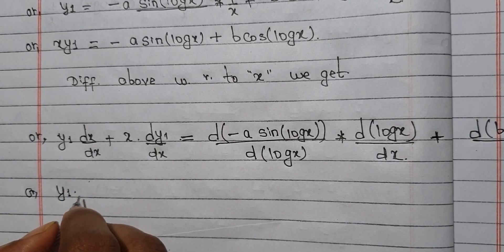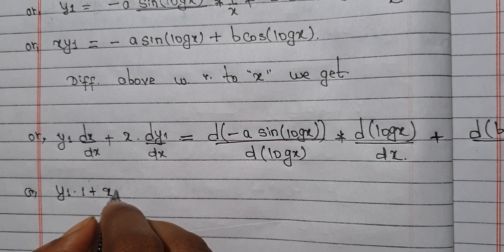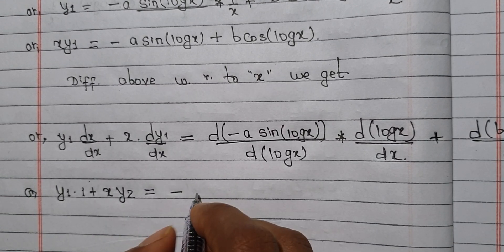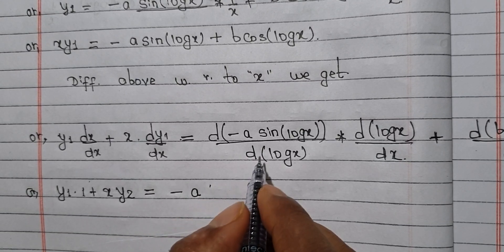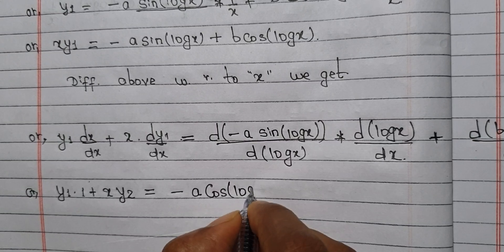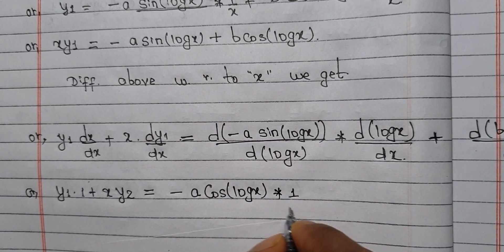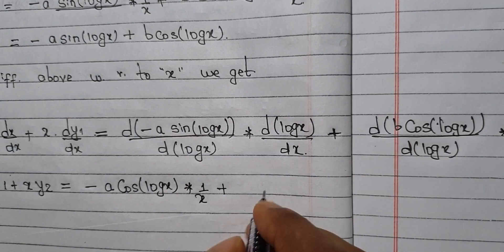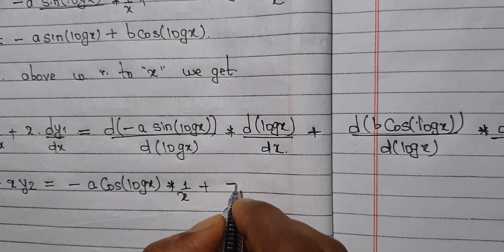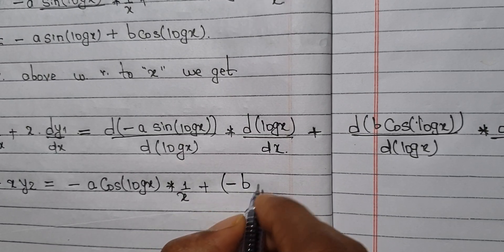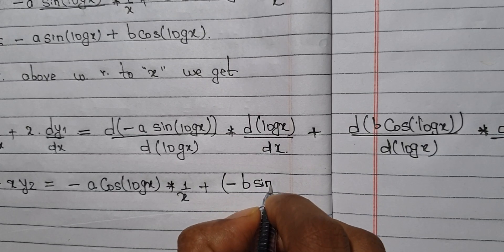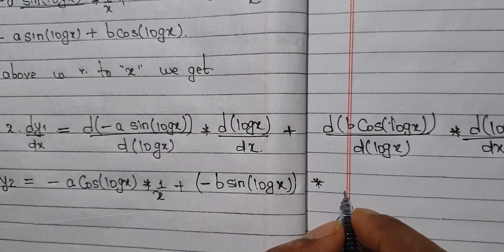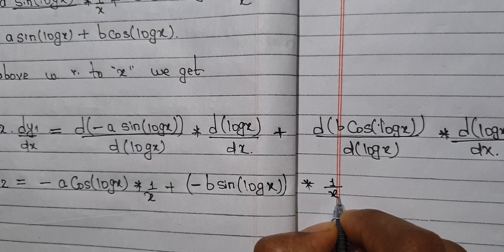y1 is good, derivative. The derivative of y1 is y2. The answer equals: minus a·sin — derivative gives cos(log x) into 1/x, log x derivative is 1/x, plus: cos derivative gives minus b·cos·sin(log x) into derivative of log x, which is equal to 1/x.